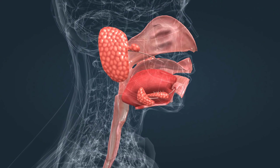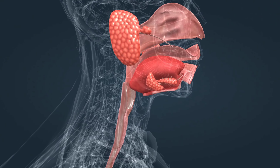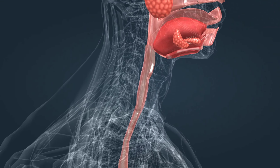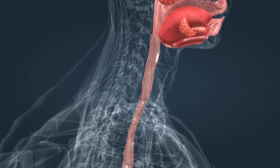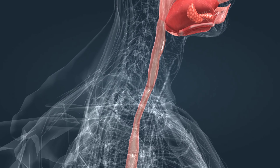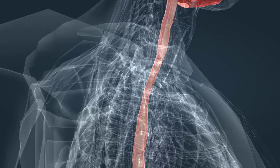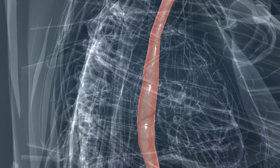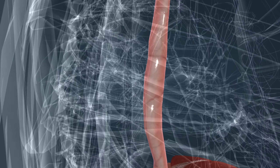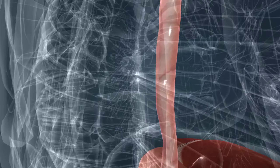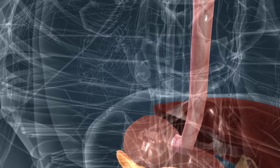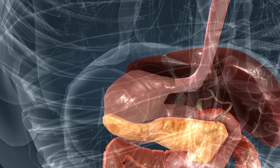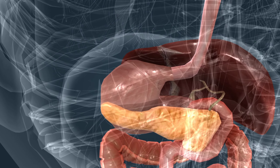The digestive system is responsible for the digestion and absorption of nutrients. Food is crushed in the mouth by the teeth, and digestion of carbohydrates can then begin. Proteins are digested in the highly acidic stomach. Then, in the small intestine, all three types of nutrients are absorbed.